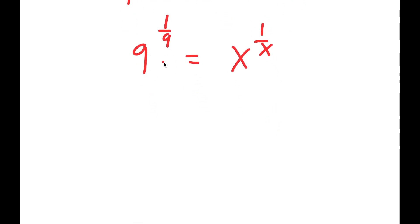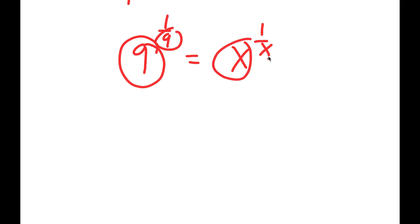Notice how this is in the form: a number to the power of 1 over that same number is equal to x to the power of 1 over x, meaning x is equal to this number 9.